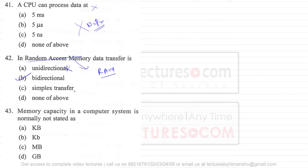Question 43 says: the memory capacity in a computer system is normally not stated as—it's not stated as Kb because this is kilobit. When I'm saying capital B, it means byte. We say that memory capacity is given in kilobyte, megabyte, gigabyte, but it is never given in kilobit. So the answer is option B.